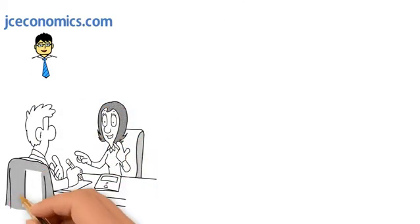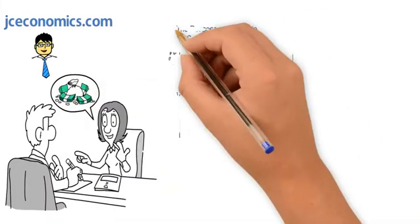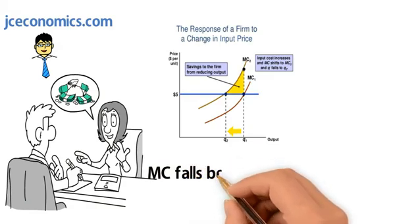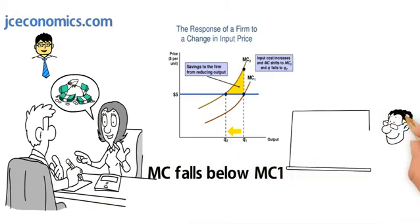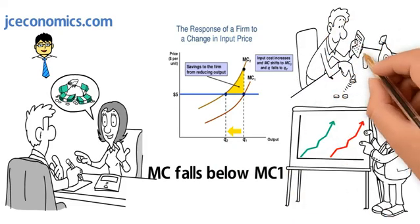Prices therefore remain largely stable in an oligopoly. In the case where MC rises above MC2 or if MC falls below MC1, the price will be changed only in these cases. A new kink would then be formed at the new prices.